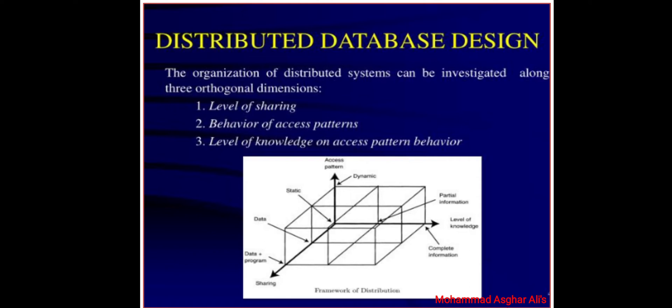The third dimension of classification is the level of knowledge about the access pattern behavior. One possibility is that the designers do not have any information about how users will access the database. This is a theoretical possibility, but it is very difficult, if not impossible, to design a distributed DBMS that can effectively cope with this situation. The more practical alternative is that the designer has complete information where the access pattern can reasonably be predicted.